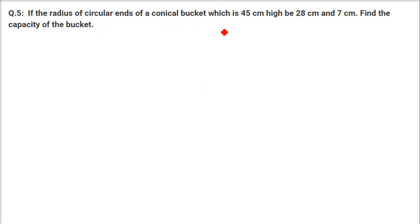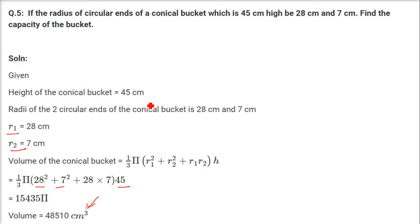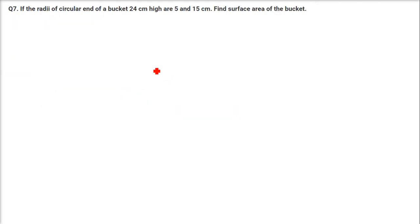If the radii of the circular ends of a conical bucket which is 45 cm high are 28 and 7, find the capacity of the bucket. The radii r1 and r2 and height are all given, so we directly use: π/3 × (r1² + r2² + r1·r2) × h, putting in 28², 7², and 45.